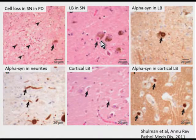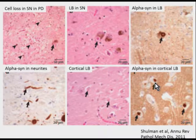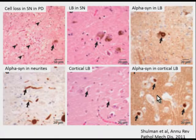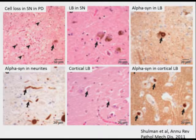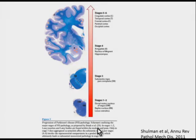In addition to Lewy bodies in the substantia nigra, one will often find cortical Lewy bodies in diffuse Lewy body diseases. These are less well developed and more difficult to see, so we rely heavily on the alpha-synuclein immunostain, which shows these inclusions in the cortex. The interest in the distribution of these inclusions in Parkinson's disease has led to a theory that there may be progression through a stereotypic pathway from early to later stages of disease.